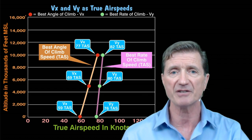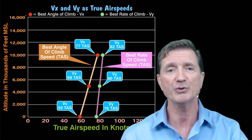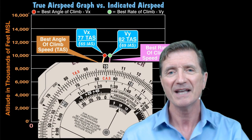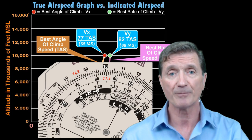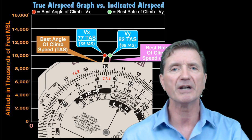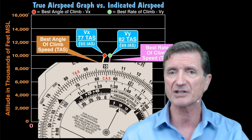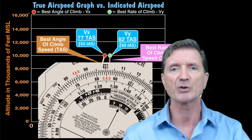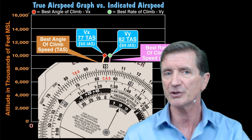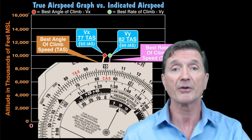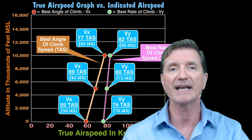Here's the plot of VX and VY as true airspeed values on a traditional graph. Ask yourself: what airspeed would you need to indicate to achieve each true airspeed value for VX and VY at sea level, 5,000 feet, and 10,000 feet MSL? The way to find that out is to use your E6B computer. At 10,000 feet MSL on a standard day, we need an indicated airspeed of 65 knots to produce a true airspeed of 77 knots, and an indicated airspeed of 69 knots to produce a true airspeed of 82 knots. And when you do this for all the other airspeed values, you get these indicated airspeeds.